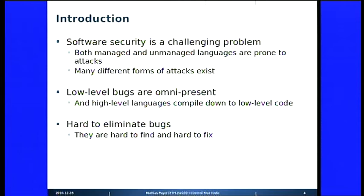Software security is a very challenging problem. We have both managed and unmanaged languages. Managed languages like C# and Java run in a virtual machine, but they are still prone to attacks. We can exploit the just-in-time compiler or the libraries these virtual machines use. For unmanaged code compiled from C or C++, we have many more attack vectors: buffer overruns, missing checks, and more. There are many different forms of attacks that exist.